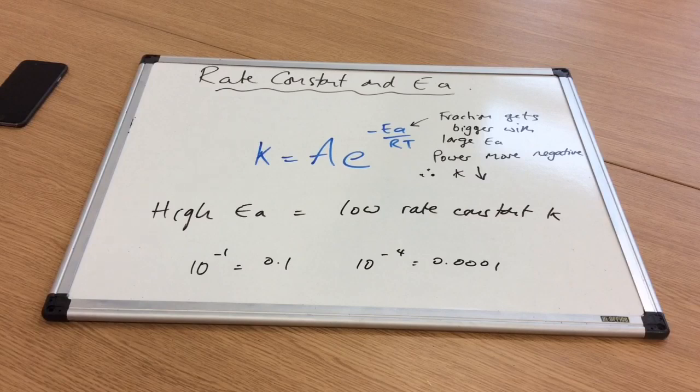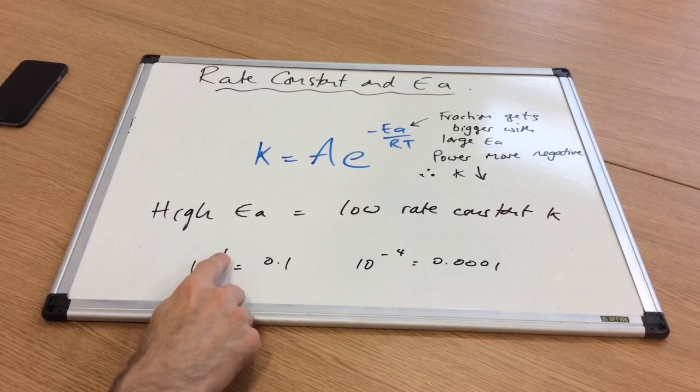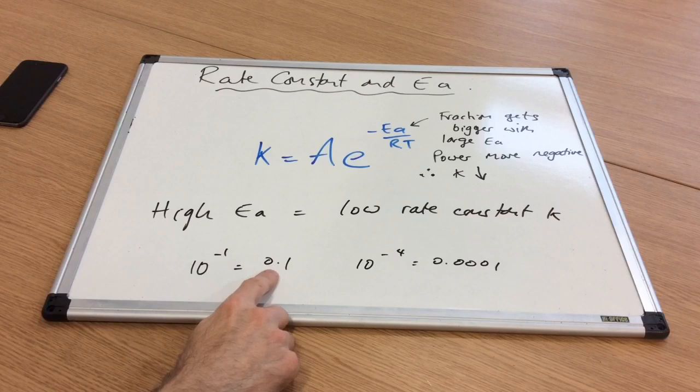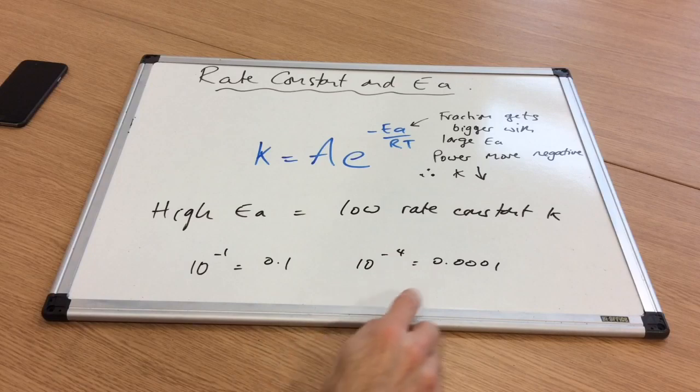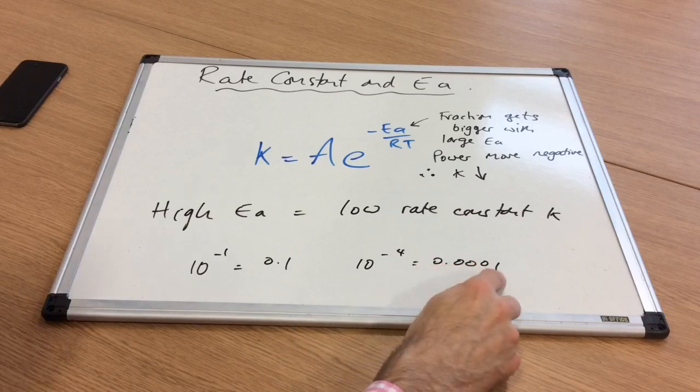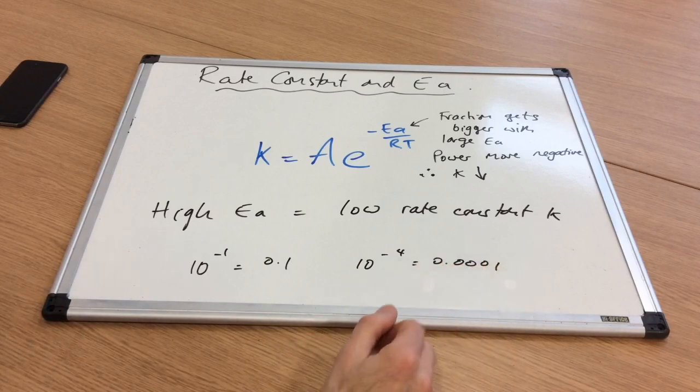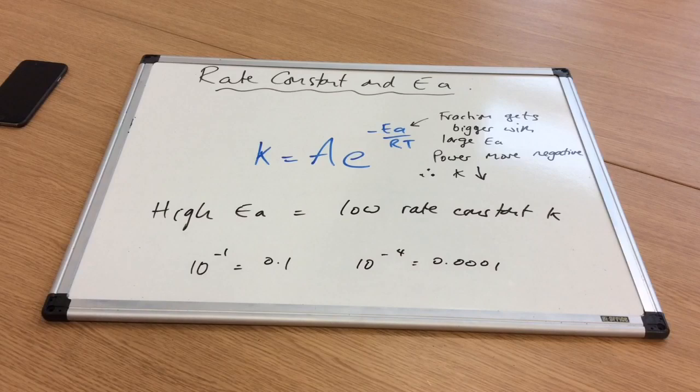Sometimes it's easy to put some numbers in to illustrate that. 10 to the minus 1 is 0.1. 10 to the minus 4—raising it to a bigger negative power—is 0.0001, so it's a much smaller number raised to a more negative power.